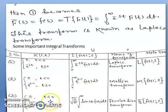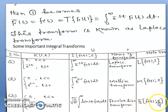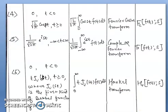For the third case, if k(s,t) = 0 when t is less than 0, and √(2/π) sin(st) when t is greater than or equal to 0, the integral becomes √(2/π) times the integral from 0 to infinity of sin(st) f(t) dt. This is known as the Fourier sine transform, denoted by F_s{f(t); s}.